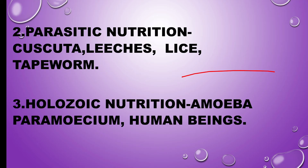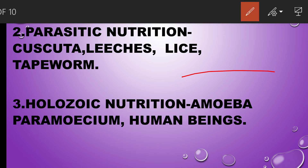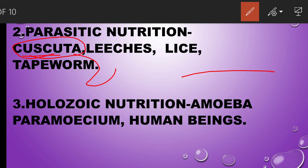The next type is parasitic nutrition. Parasites depend on other organisms for their food but do not kill those organisms. For example, cuscuta is a parasitic plant that depends on other plants for growth and development because it lacks chlorophyll to capture sunlight. Leeches suck blood from cattle, and lice suck blood from humans without killing them. Tapeworm is an intestinal parasite that absorbs digested food from patients with teniasis.